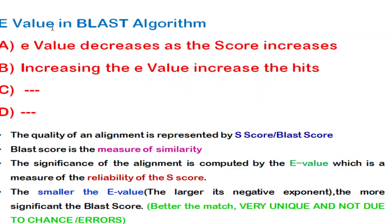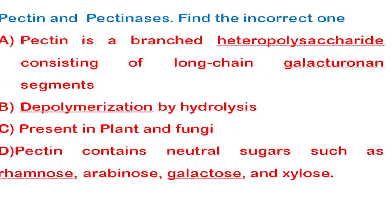The next question is about the E-value in the BLAST algorithm. The quality of alignment in BLAST is represented by the S-score or BLAST score, which is a measure of similarity. The E-value is a probability value that measures the significance of the alignment. The smaller the E-value, the more significant the BLAST score — meaning as BLAST score increases, E-value decreases.